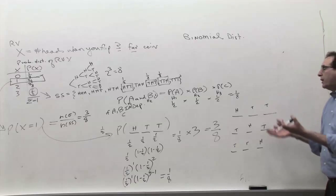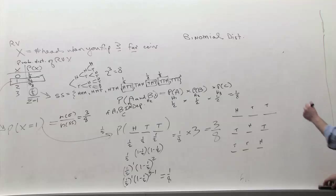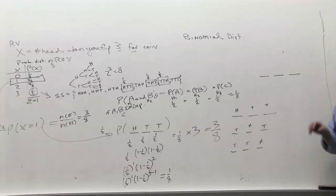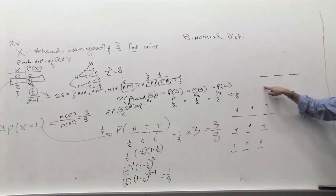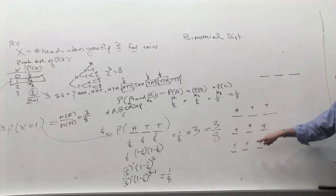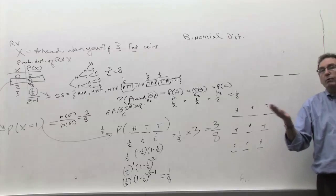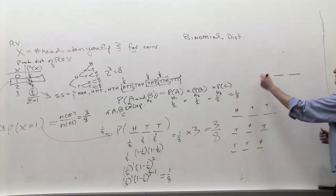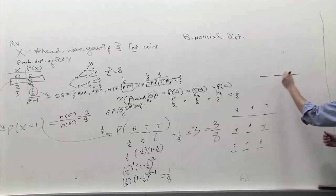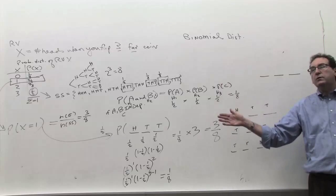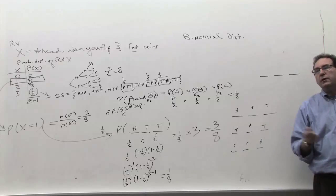But how do you generalize this to a formula? One way of understanding how it goes to a formula is by thinking about flipping three coins as three slots, and you have to pick one of those slots to be an H. How many ways can you do that? I can either put the H at the beginning, in the middle, or at the end. I have three different choices — like three people on a committee and one of them has to be a subcommittee of size one. So the question is, how many different ways can you choose from three, so one of them has to be pulled out to be considered a head?